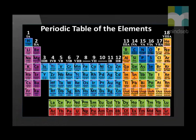As you know, some periodic tables number all the groups across the periodic table, which means that group 7 is labelled as group 17, and group 8 is 18. You need to be able to use both ways of numbering the groups.